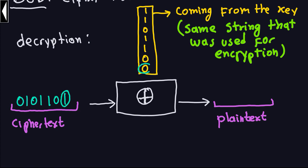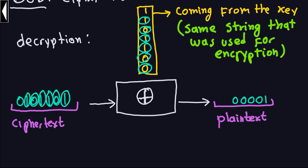Starting with this one and zero, that gives me one because one XOR zero is one. The next one: zero XOR zero is zero. One XOR one is zero. One XOR one is again zero. Zero XOR zero is zero. One XOR one is zero. And finally zero XOR one is one.